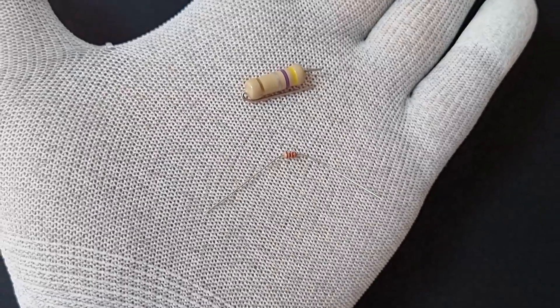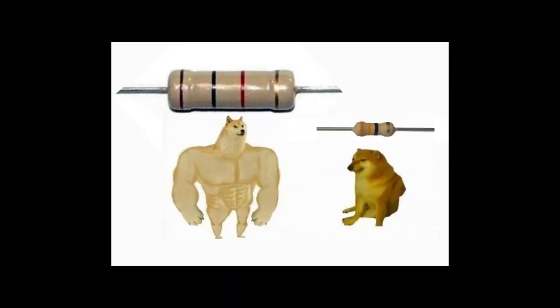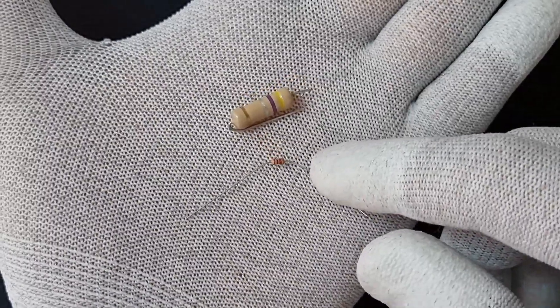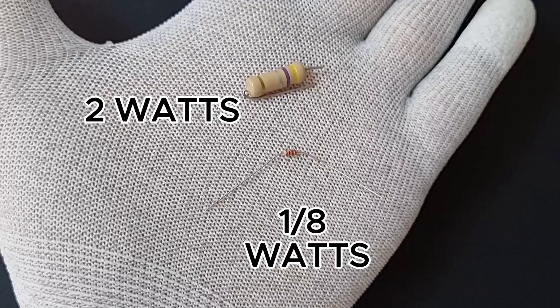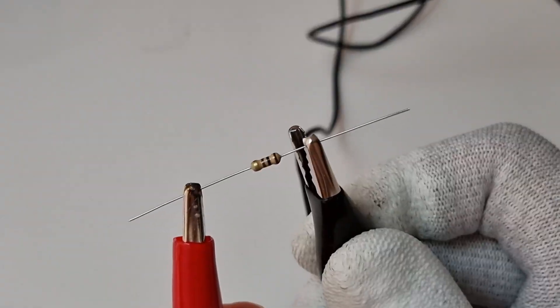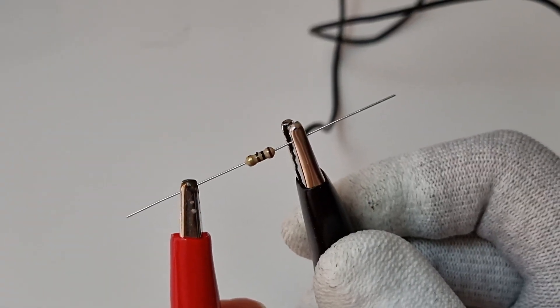As you might guess, the bigger the resistor the more power it can handle. And yes, you are correct. This small resistor can handle up to 1/8 watt while this larger one can handle up to 2 watts. If you apply more power than that, this is what happens.